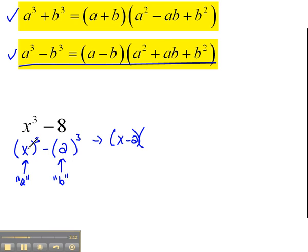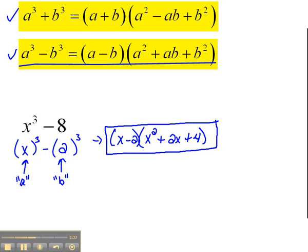Times, we take the a and we square it. So, this time we would take the x and square it. That would be x squared. Plus, the a times the b. So, that would be x times two, which is two x plus the b and square that. So, take the two and square it, which would be four. We just follow the pattern specifically.